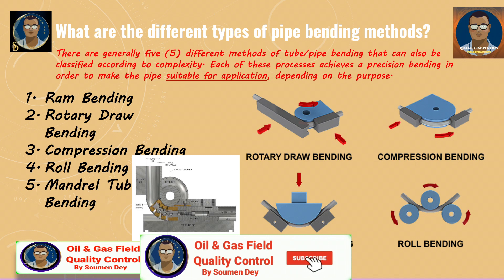Tube bending is a process used to reshape tubing or piping into a certain shape or design. This process works on metal alloys, aluminum, titanium, and steel. Various methods are used for bending tubes depending on the material in use and the required precision. The most common procedures are rotary draw bending, three-roll bending, compression bending, and ram bending, which is also termed press bending.